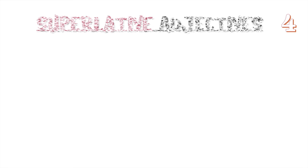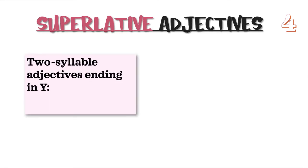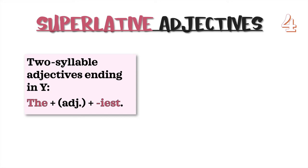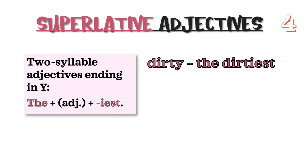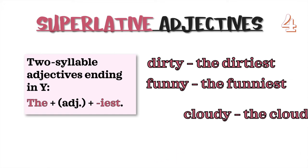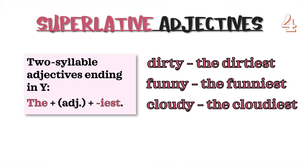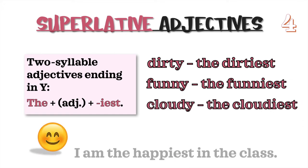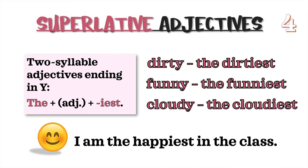Superlative Rule 4: Two syllable adjectives ending in y. The formula is the, plus adjective, plus -iest. We take out the y and add i. For example: dirty → the dirtiest; funny → the funniest; cloudy → the cloudiest. Example sentence: I am the happiest in the class.